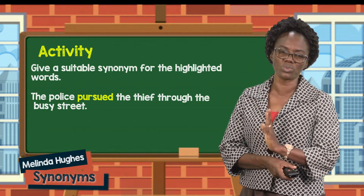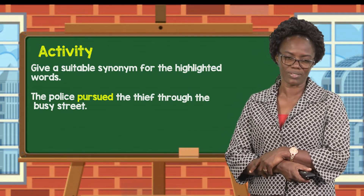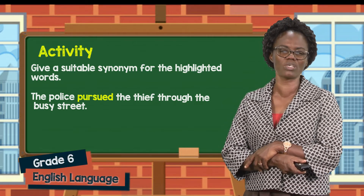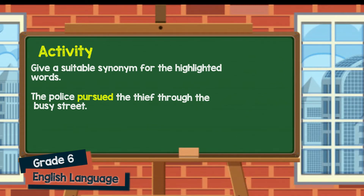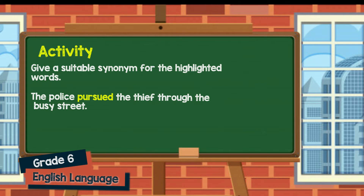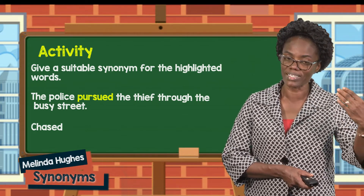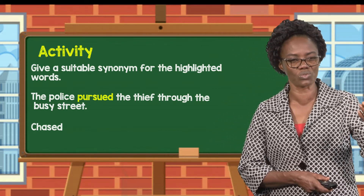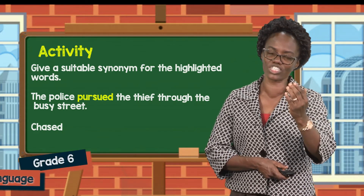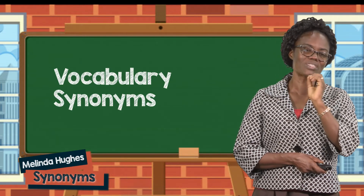Next sentence: the police pursued the thief through the busy street. The word that you will give a suitable synonym for is pursued. Because you are thinking and picturing in your mind, you can already give the word for pursued — the synonym for it. What is that word? Chased. So the police chased the thief through the busy street. And there we have our little activity.